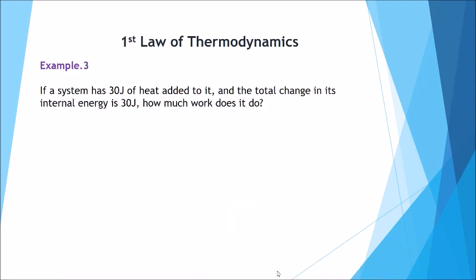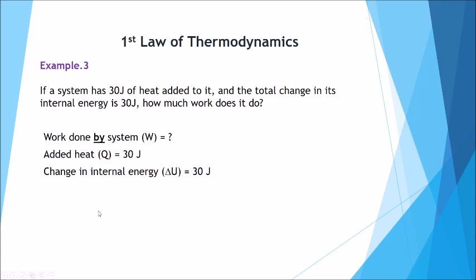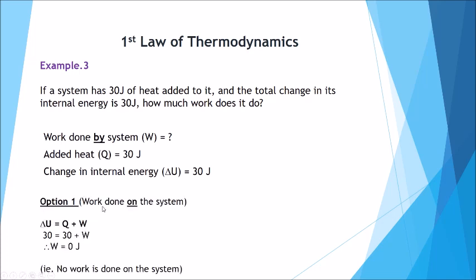Example three. If a system has 30 joules of heat added to it and the total change in its internal energy is 30 joules, how much work does it do? We write down our unknown and the variables we know. From a chemistry perspective, delta U equals Q plus W. The change in internal energy is 30 joules, heat added is plus 30, and 30 plus 30 equals zero, so no work has been done on the system.